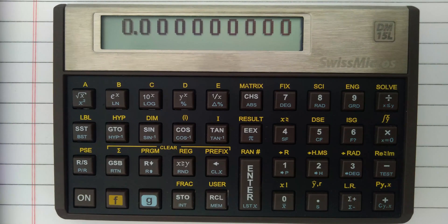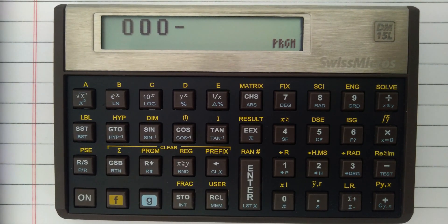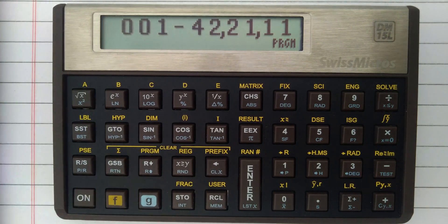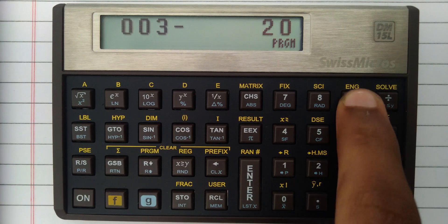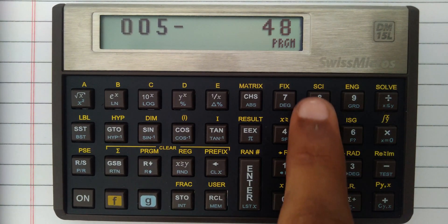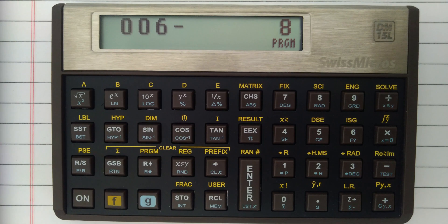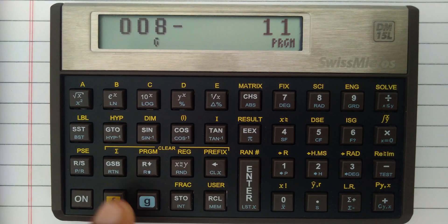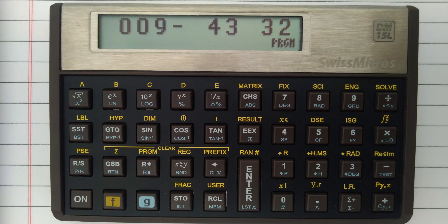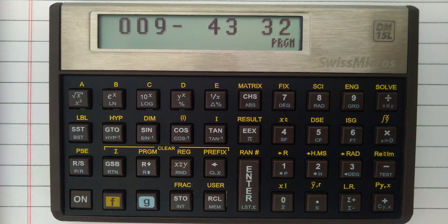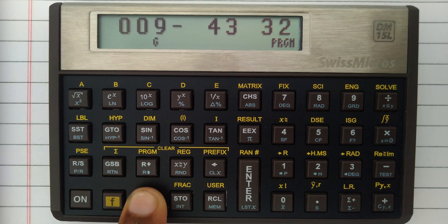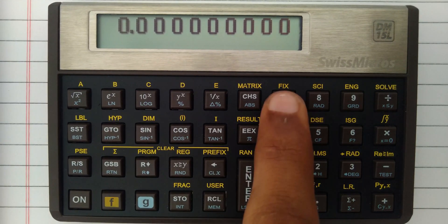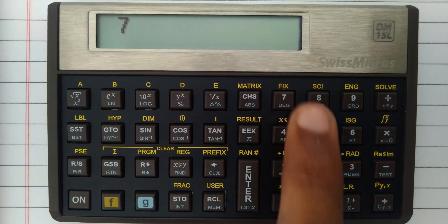This calculator can even do programming. That means if you have the formula for a specific problem and if you want to know the output, you can just enter the given values and get the output. Here I have programmed a program to calculate the time taken by an object that is free falling from a height h towards the earth with acceleration due to gravity as 9.8 meters per second squared. So when I input any height, I can get the time taken by the object to reach the ground.